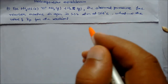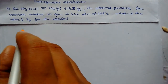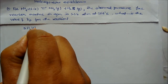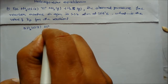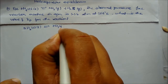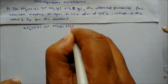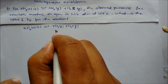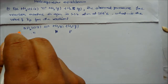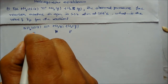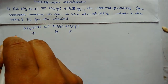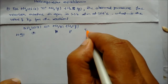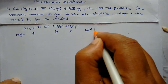We have to find the value of Kp for the reaction. Writing the equation: NH4HS (solid) converts into ammonia (gas) and H2S (gas). The partial pressure of each gas is P, and since ammonium sulfide is a pure solid, its activity is unity at equilibrium.